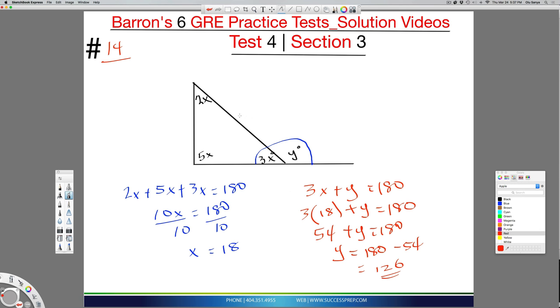So it's really knowing the rules of triangles, knowing that everything in a triangle adds up to 180 and everything on a straight line also adds up to 180. And that pretty much is it. It takes care of what we need to do. And we know that Y will be 126.